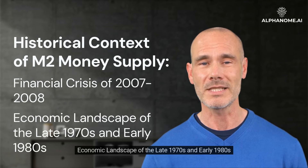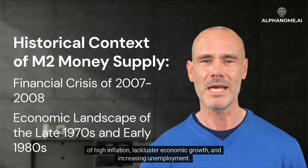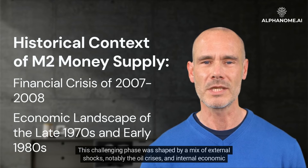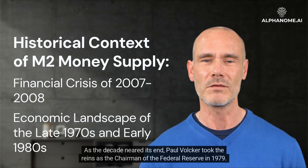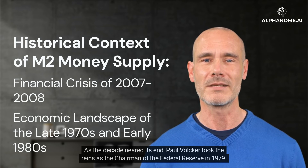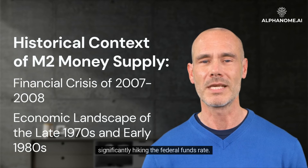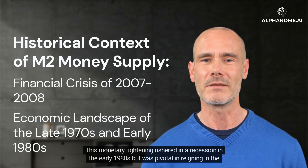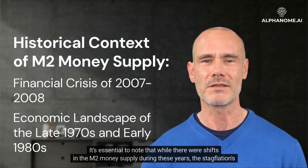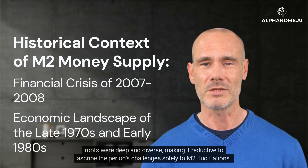Economic landscape of the late 1970s and early 1980s: the U.S. was engulfed in a period of stagflation throughout the 1970s, marked by high inflation, lackluster economic growth, and increasing unemployment. This challenging phase was shaped by external shocks, notably the oil crises, and internal economic dynamics. As the decade neared its end, Paul Volcker took the reins as chairman of the Federal Reserve in 1979. Faced with rampant inflation, Volcker's Federal Reserve significantly hiked the federal funds rate, ushering in a recession in the early 1980s but pivotally reining in the inflationary spiral. It's essential to note that while there were shifts in the M2 money supply during these years, stagflation's roots were deep and diverse, making it reductive to ascribe the period's challenges solely to M2 fluctuations.